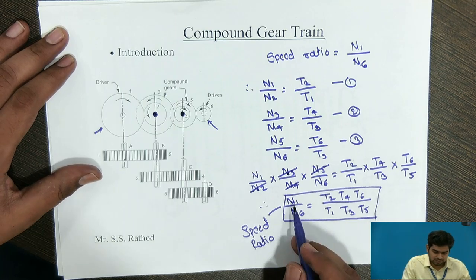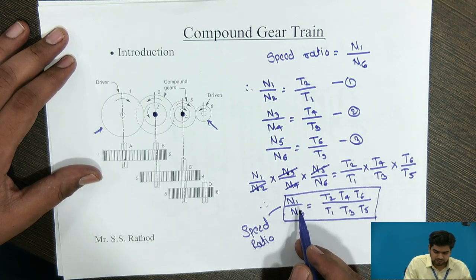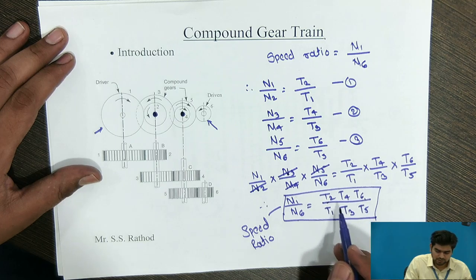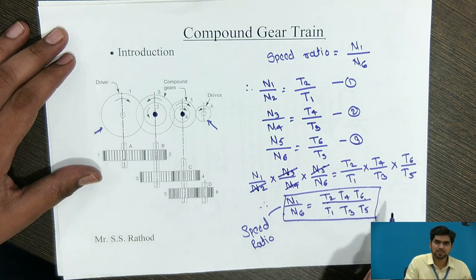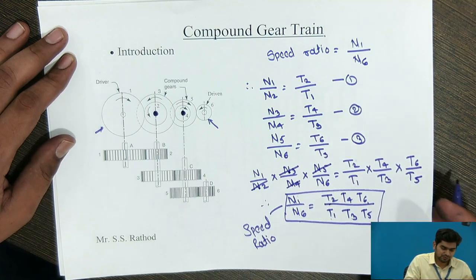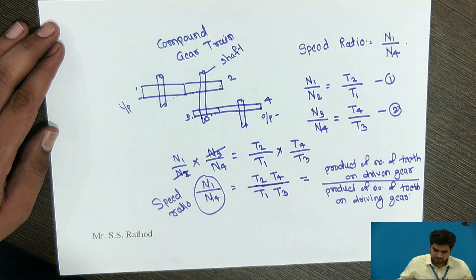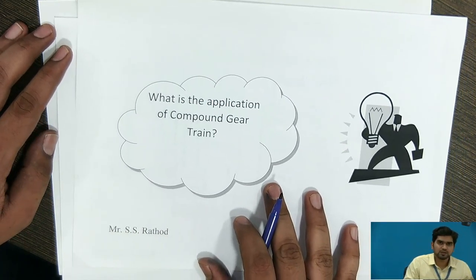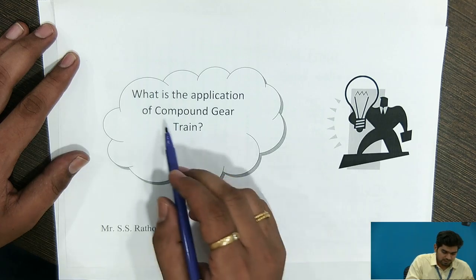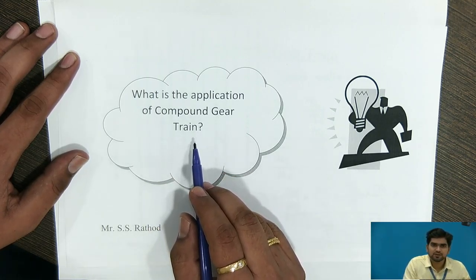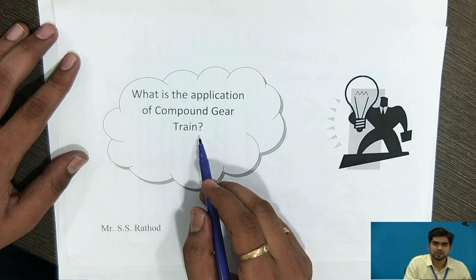So the speed ratio — speed of the driving gear divided by speed of the driven gear — equals the product of number of teeth on the driven gears divided by the product of number of teeth on the driving gears. This is how we find the speed ratio. Generally in day-to-day life we observe compound gear trains in various mechanisms.